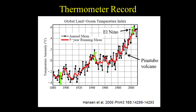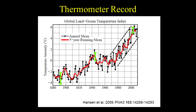Global temperature variability can also be due to natural external forcing — processes external to the climate system that perturb its energy balance, such as natural volcanoes, or Pinatubo in 1991. It can also be due to anthropogenic external forcing, such as increased greenhouse gas or aerosol emissions. It is clear that average temperatures have increased over the last century.